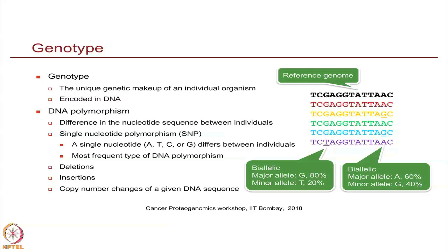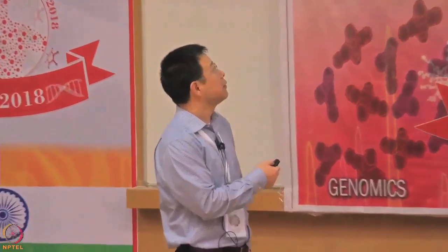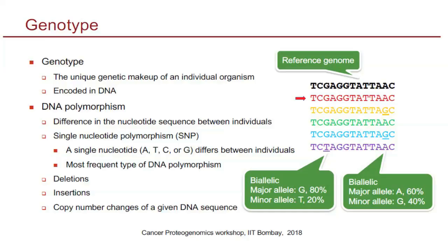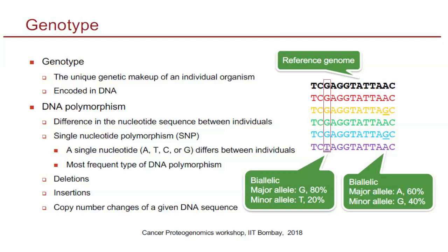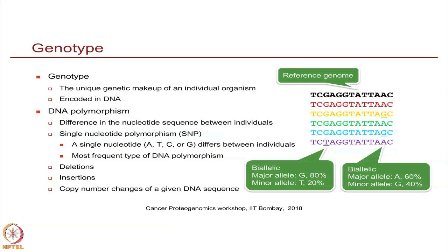If we look at this example sequence, which you can probably download from the human genome sequence — it is just a short fragment — we can see some individuals have exactly the same sequence as the reference, but this individual has a different nucleotide at this position. Looking at this position, there are two possible alleles: one is G and the other is T. This is a biallelic locus, meaning two different types of alleles. The major allele is G because it occupies 80 percent of this small population, and the minor allele is T which is only 20 percent — 1 out of 5.